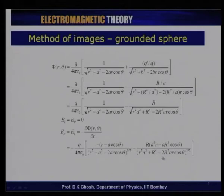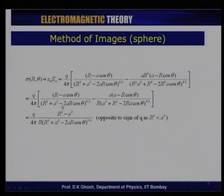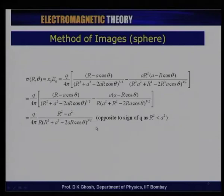The reason I calculate the normal component of the electric field is because the surface charge density σ is related to the normal component. I find the value of the normal component at r = R, multiply by ε₀, and we get σ = q(R² − a²) / [4πR · (R² + a² − 2aR cosθ)^(3/2)].